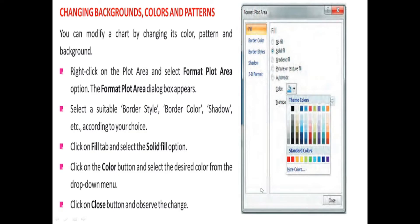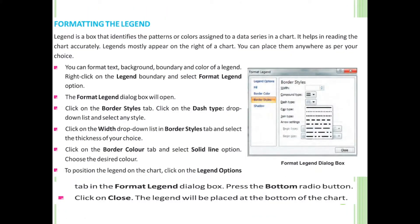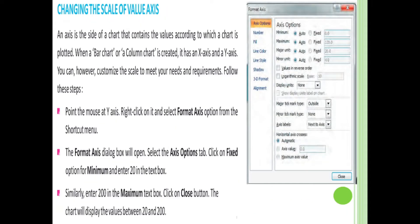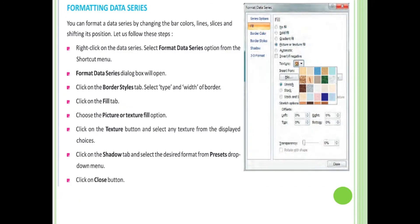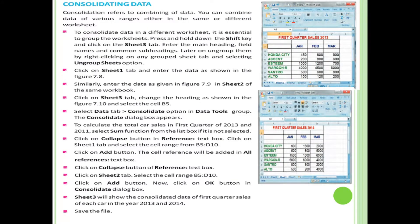The formatting operations include: changing the background, formatting the legend, changing the scale values, and formatting the data series. Just place your cursor on which area you want, right-click, and make whatever changes you need.